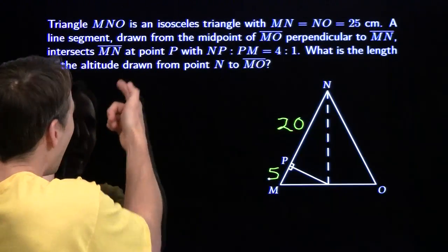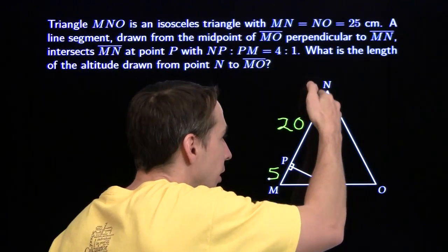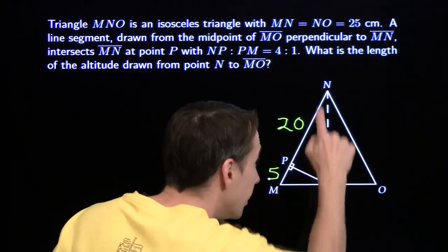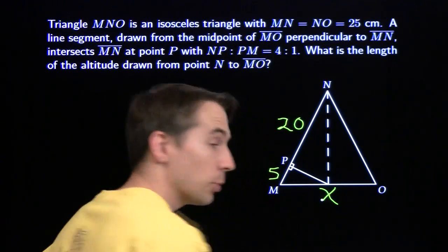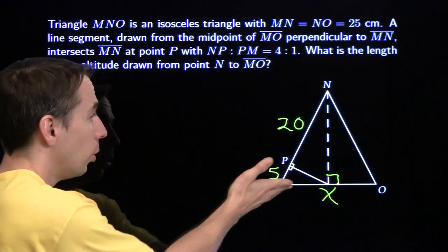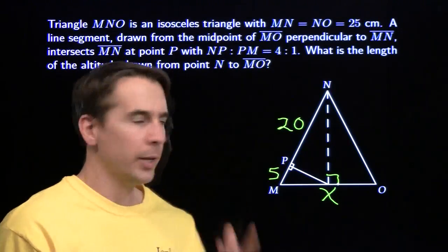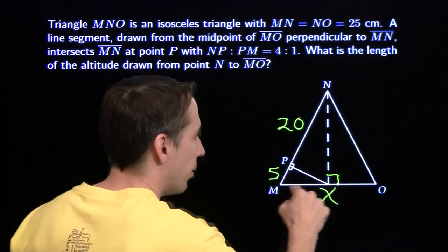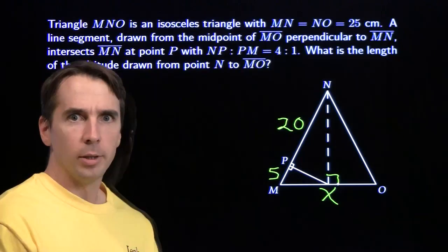We want to find the altitude from N down to MO. Since this is an isosceles triangle, the altitude hits right at the midpoint of the base — that's the point we drew this segment from. So these two meet at the same point on MO. We'll call it X, so NX is an altitude. We've got a right triangle and we're looking for a leg — the Pythagorean theorem seems like the right tool.